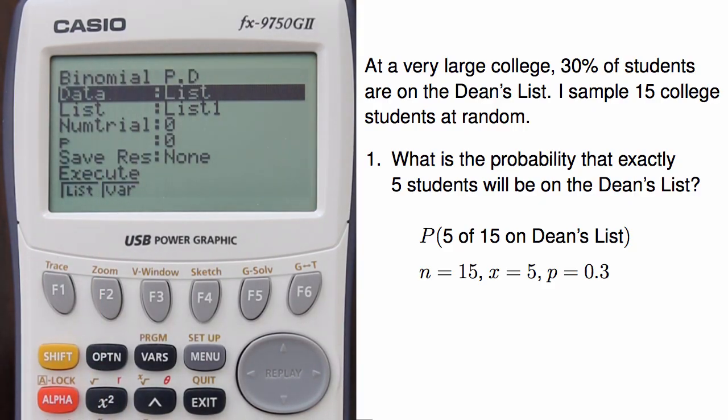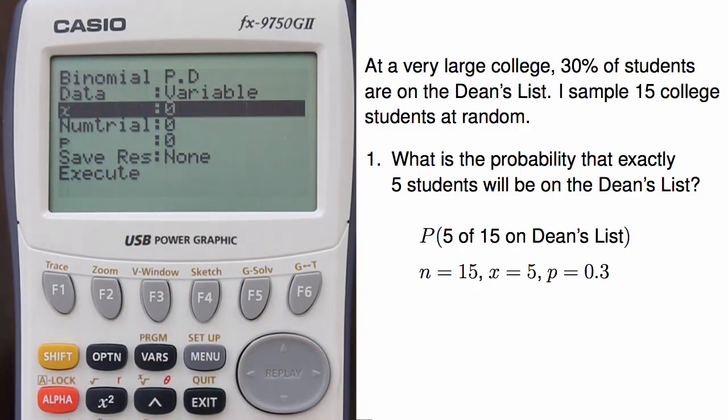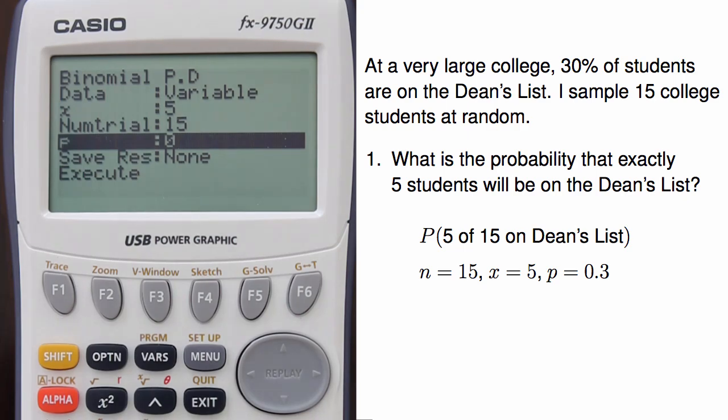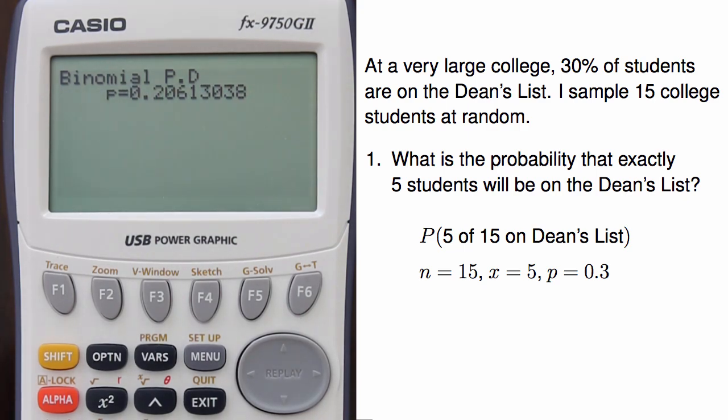Next, I enter the details into the calculator. Here it's showing the list view, and I'll need to switch to the variable view by hitting F2. Next, I can enter x, which is 5, the number of trials, which is 15, and the probability which is 0.3. Hitting execute gives the binomial probability 0.2061.